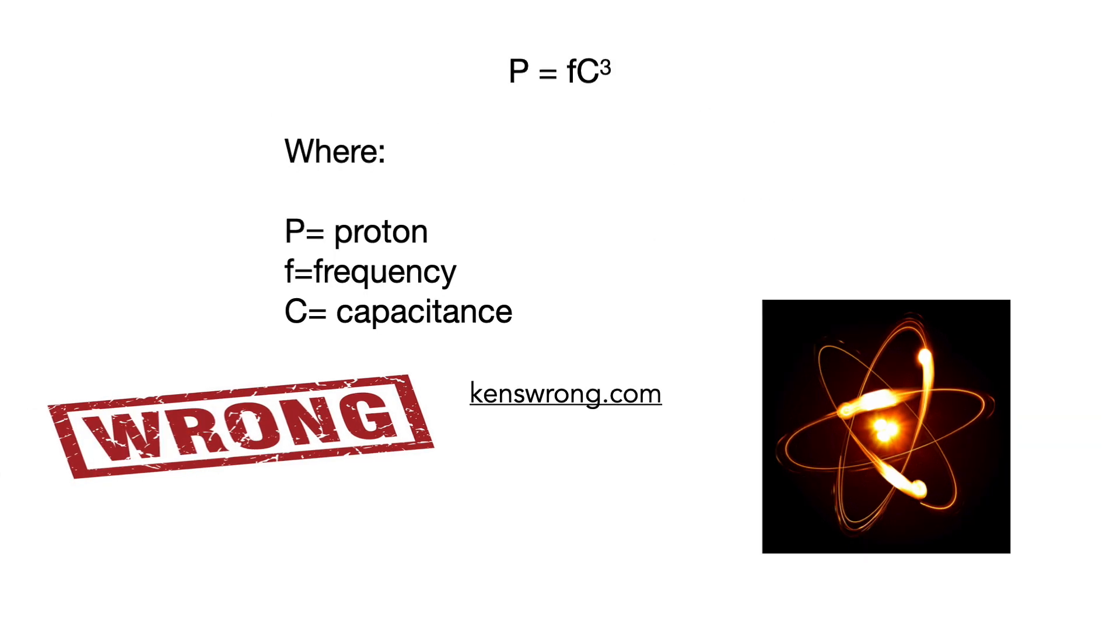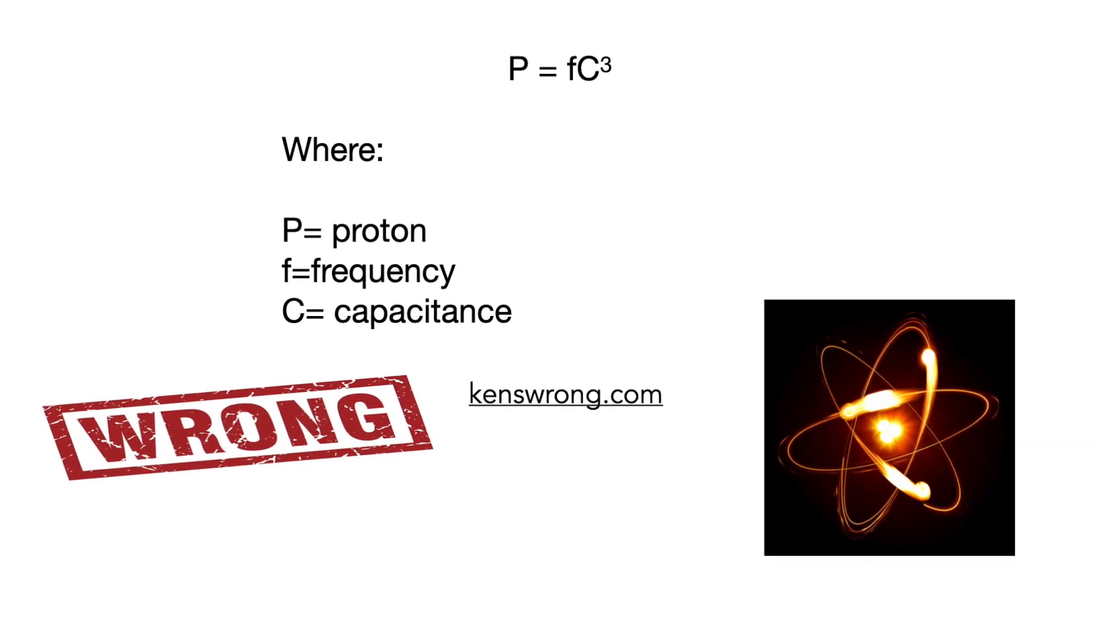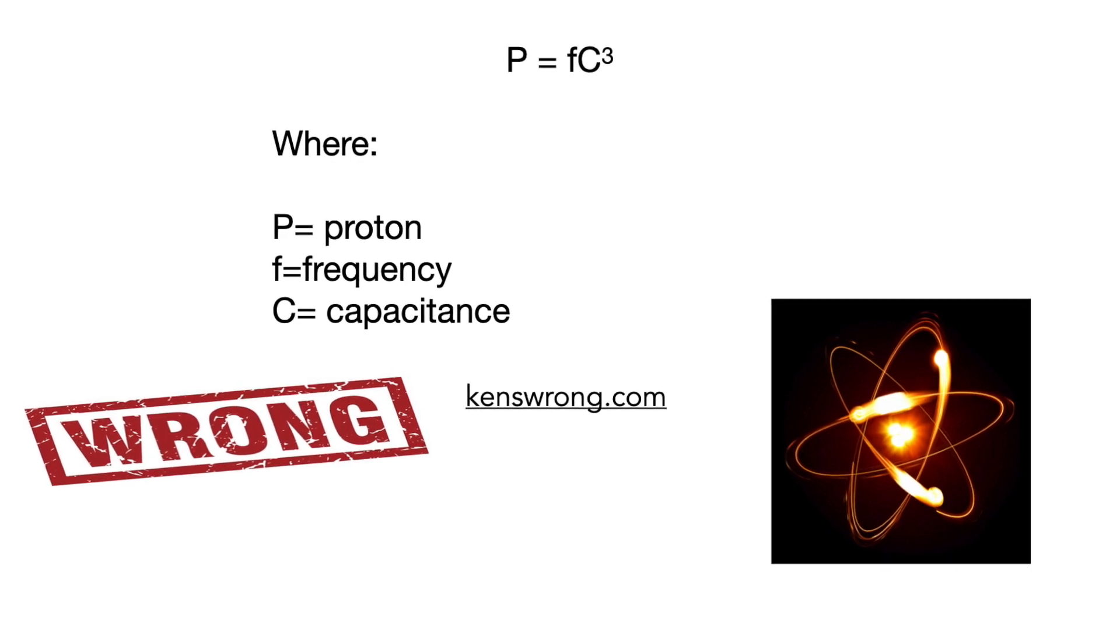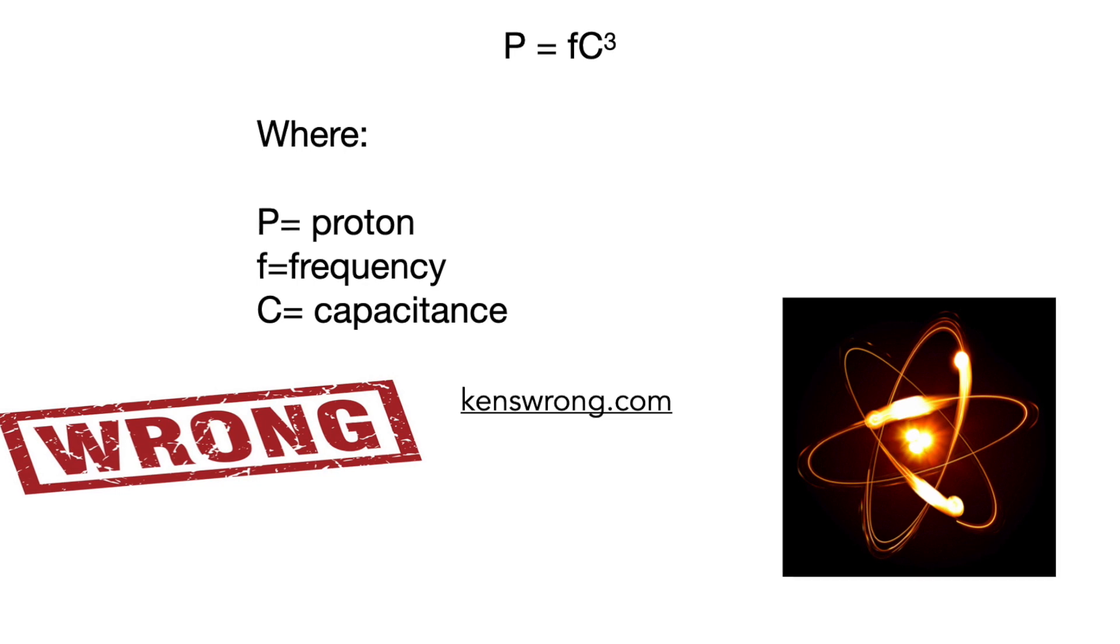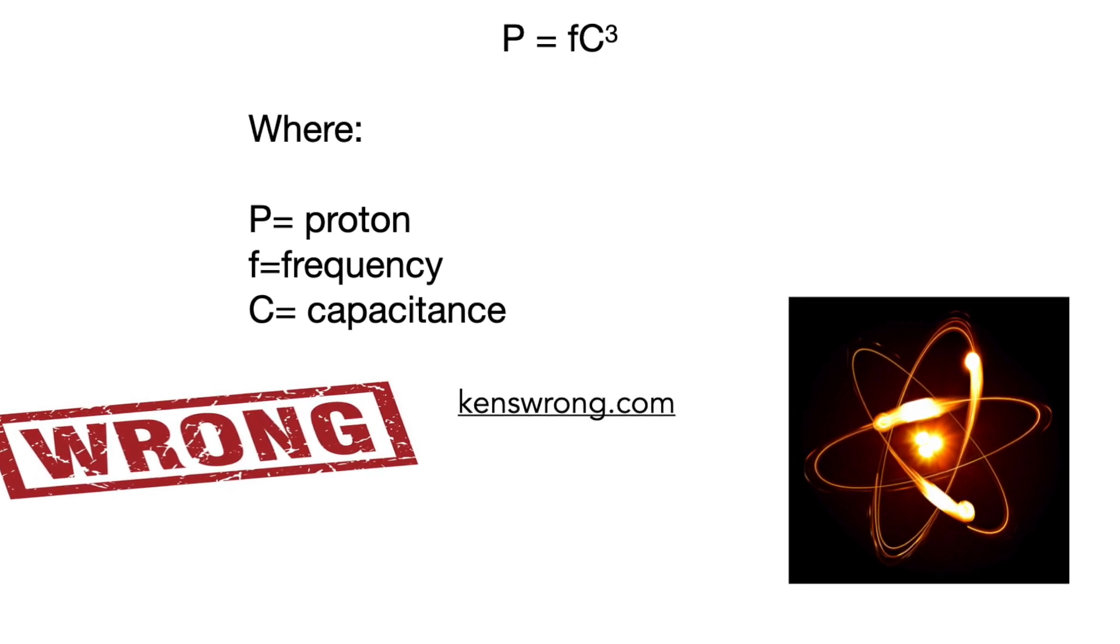The formula goes like this: p equals f c cubed, where p equals proton, f equals frequency, and c equals capacitance.